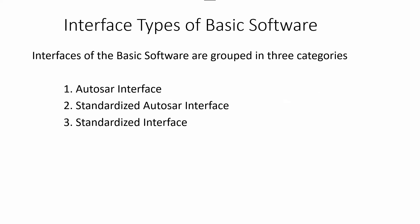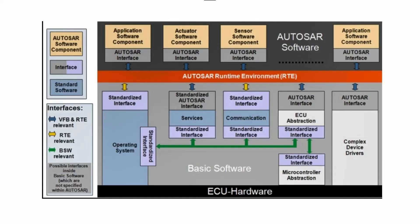Interfaces of the basic software are grouped in three categories: one is AUTOSAR interface, second one is standardized AUTOSAR interface, and third one is standardized interface. You can see this slide — here I have mentioned all the interfaces. These interfaces will be helpful to make a communication between the AUTOSAR software.